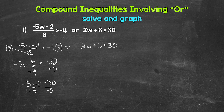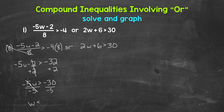Remember, when solving inequalities, when we divide or multiply both sides by a negative, the inequality symbol flips. The negative 5s cancel each other out, w is now isolated, the inequality symbol has flipped, and negative 30 divided by negative 5 gives us positive 6 — a negative divided by a negative gives us a positive. So we have w is less than 6, or...